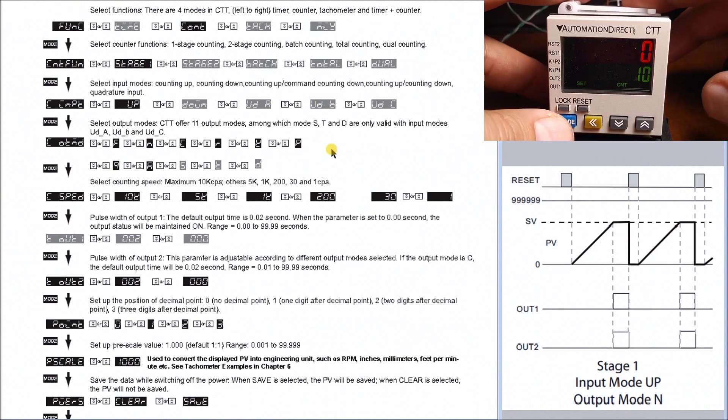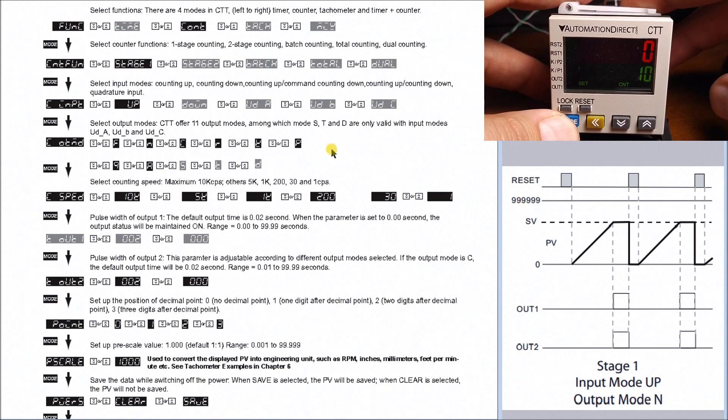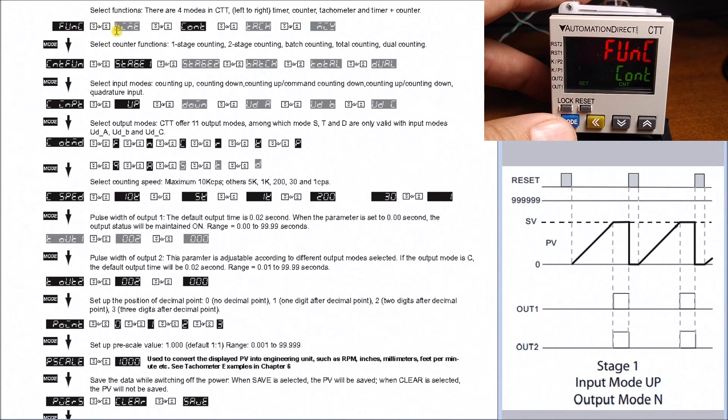Let's look at the actual programming itself. We hit and hold the mode key to get into our programming, and the first parameter is actually our counter. You'll see that we have our timer, counter, and tach, and we have our mixed mode here. We want counter, which is correct. Our next one is stage number one. We also have the other different modes that we'll be covering later.